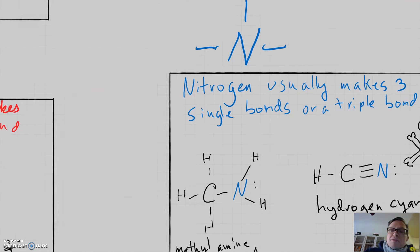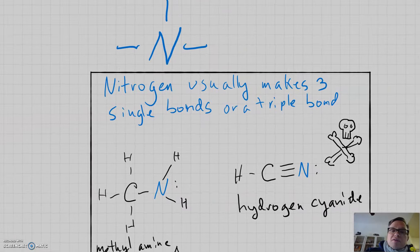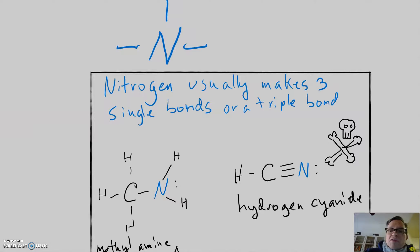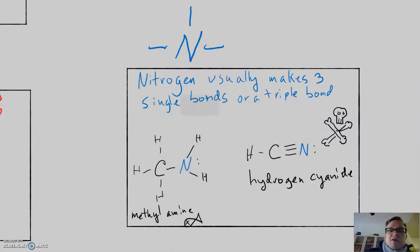Nitrogen makes three bonds with a single lone pair on it. And, so if you see it in multiple bonds, it actually usually is in a triple bond. Occasionally you can see it in a double bond, but that's not as common.